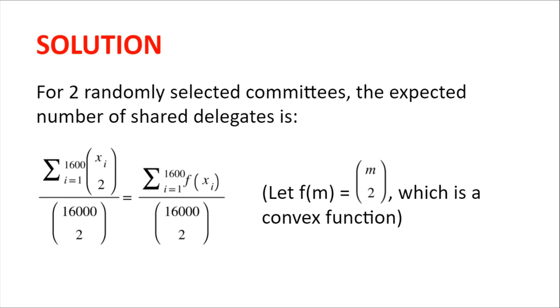Now we can rewrite this as the sum of f of xis divided by 16,000 choose two, where f of n is a convex function which is n choose two.